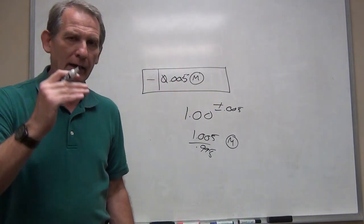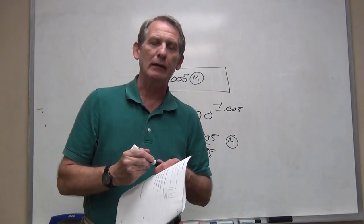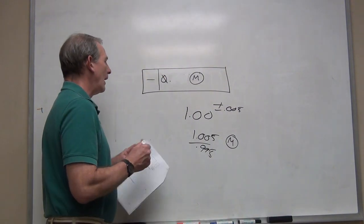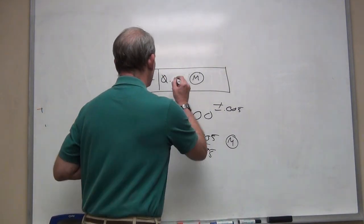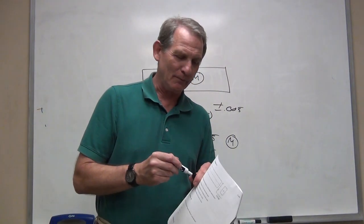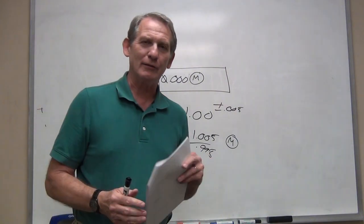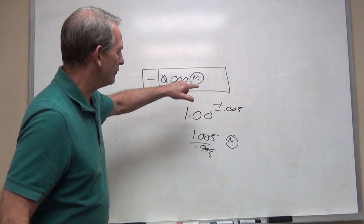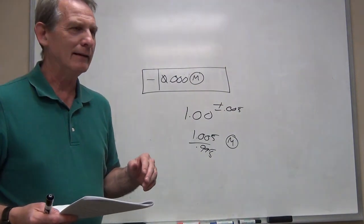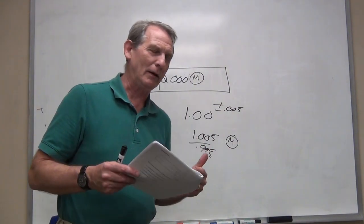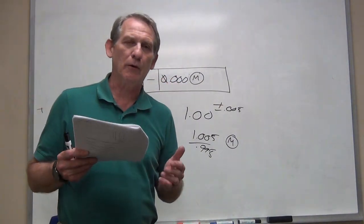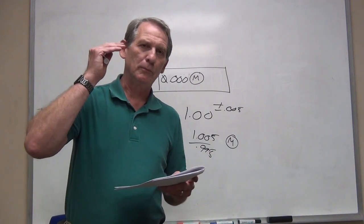As the shaft deviates from maximum material condition — say you turn a thousandth off — you get to add that thousandth to the tolerance zone. Whatever size tolerance is stated in the box is the smallest tolerance zone you'll ever get, and it will only get bigger as you deviate from MMC. There are instances where this tolerance can start out at zero, meaning the smallest possible tolerance is zero, and to get any tolerance the shaft must not be at maximum material condition.